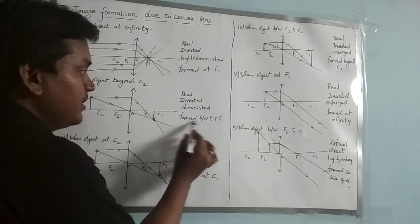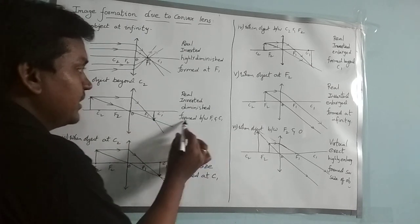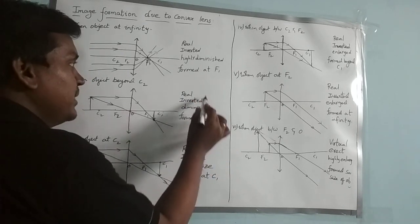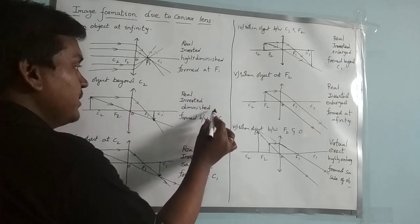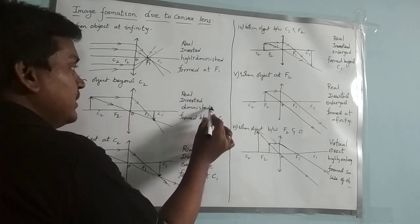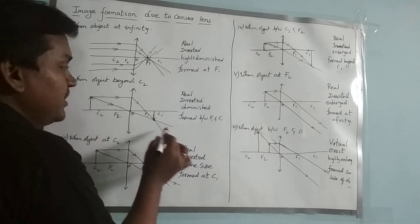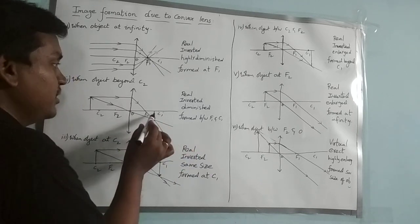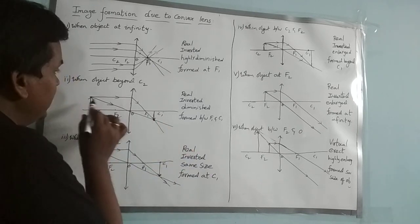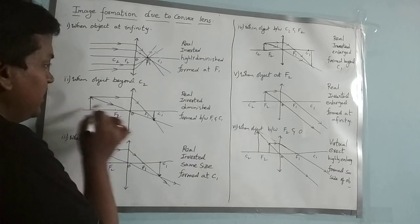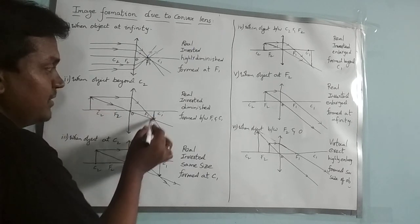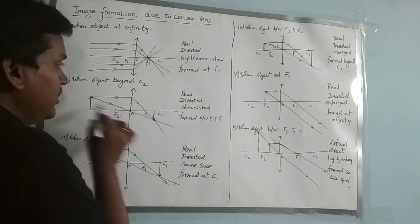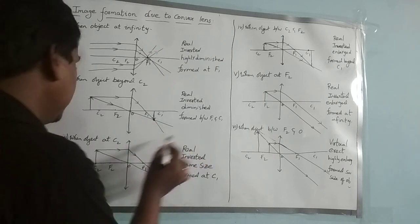The image is forming between F1 and C1. Here the image is a real image, inverted image, and it will be a diminished image — meaning the image will be smaller than the object. The image size is smaller than the object size.